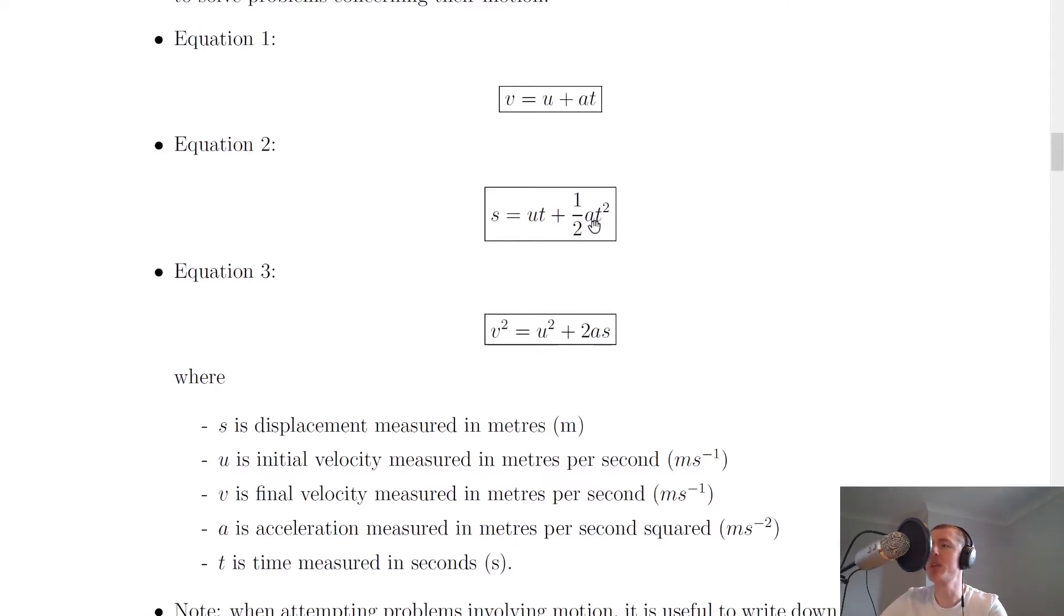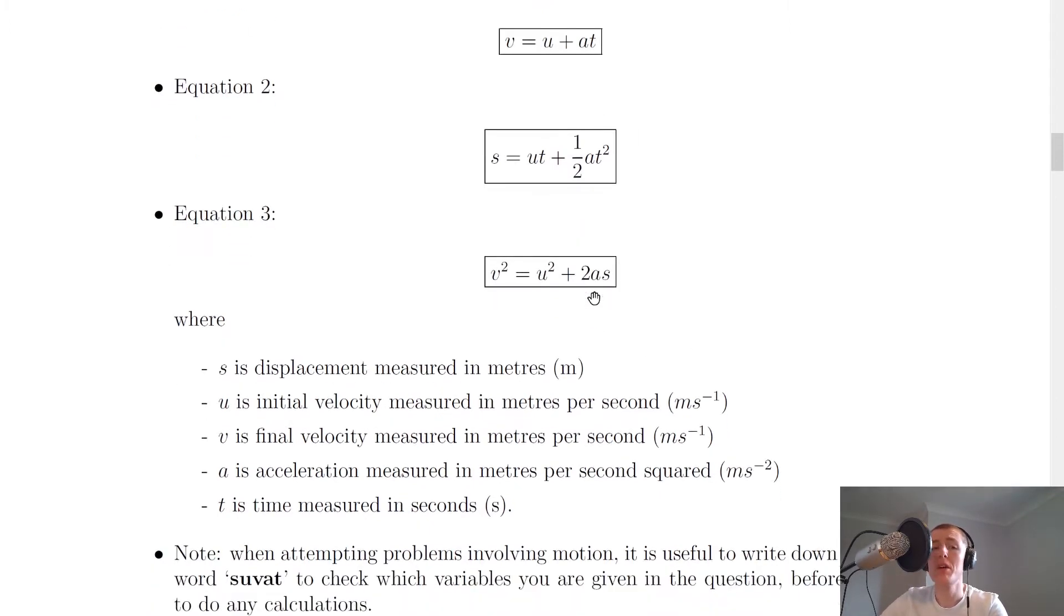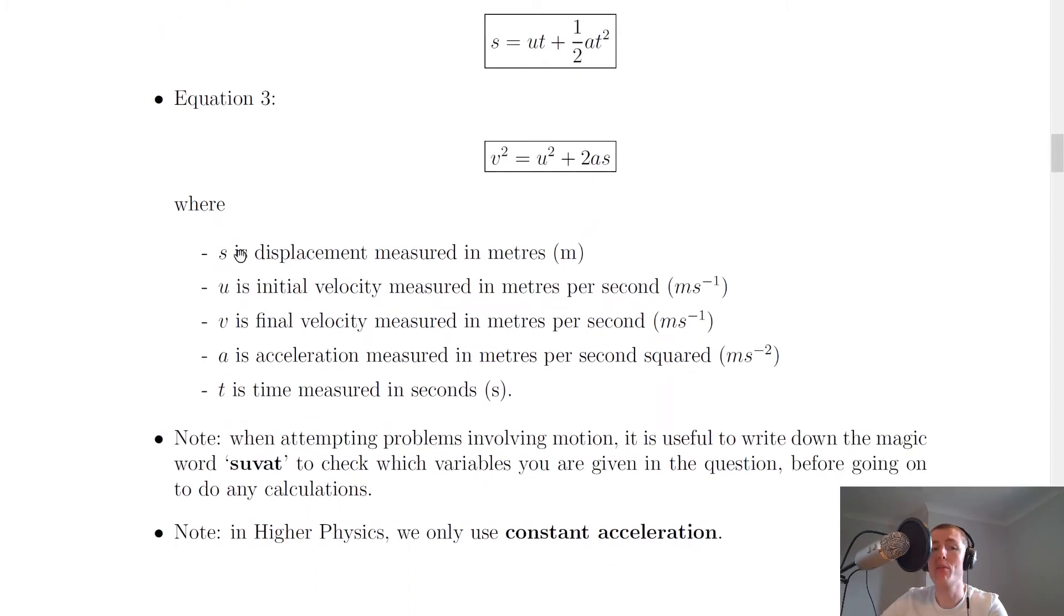And what do all these symbols mean? Well you've actually seen them all before. So I've written them here in the form of SUVAT which we'll talk about in a second. But it says here that s is displacement measured in meters. U is initial velocity measured in meters per second ms to the minus 1.